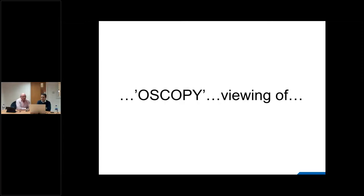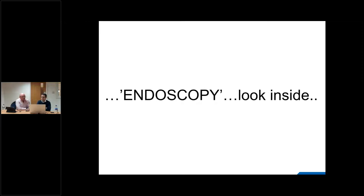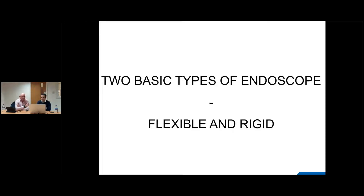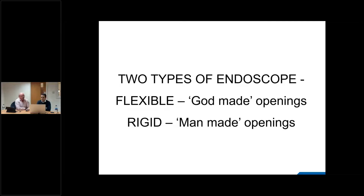Endoscopy means to look inside. There are basically two types of endoscope: a flexible endoscope and a rigid endoscope. Generally, flexible instruments go into natural orifices and rigid instruments go into man-made holes. Natural orifices are not uniform — there are lots of curves and bends — and clearly from a patient comfort perspective, putting a flexible endoscope into an opening with lots of bends and curves is much better.